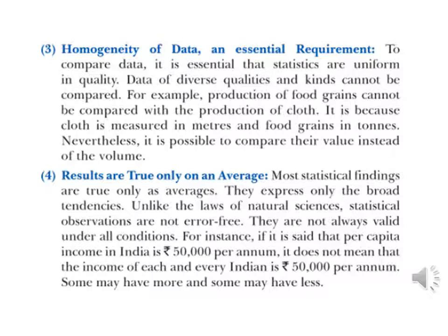For example, production of food grain cannot be compared with the production of clothes, because both must be homogeneous. Production of food grain can only be compared with production of food grain. The unit must not change. Clothes are measured in meters and food grain in tons.